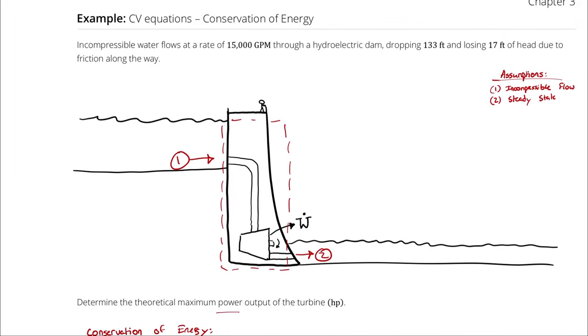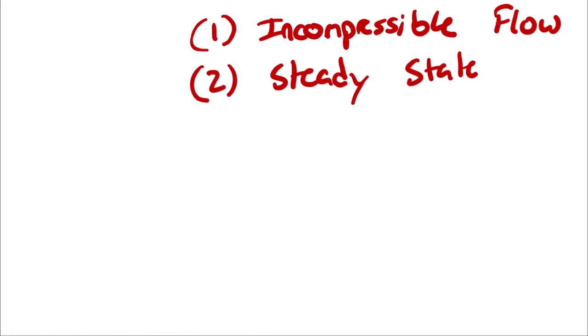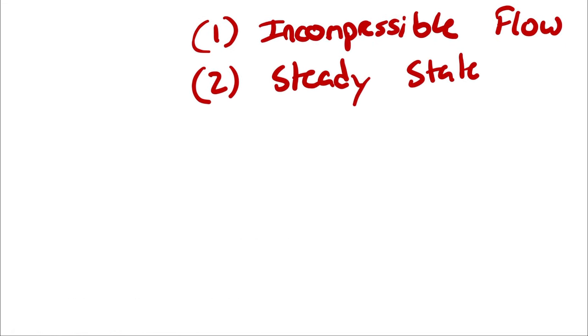Then I will assume steady state, because it doesn't appear that time matters in this problem. Regardless of when you look at the turbine, there is 15,000 gallons per minute flowing through it, and a potential energy change, some friction head loss, and a power output, none of which are affected by time. So steady state is going to be how we are going to analyze this problem.